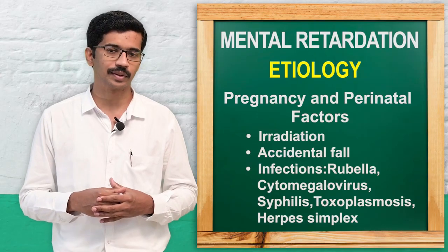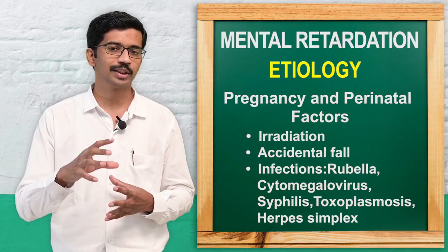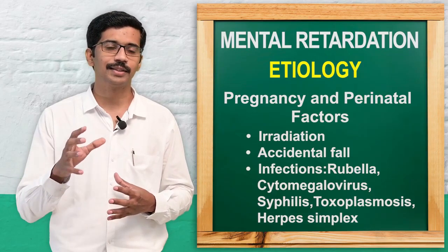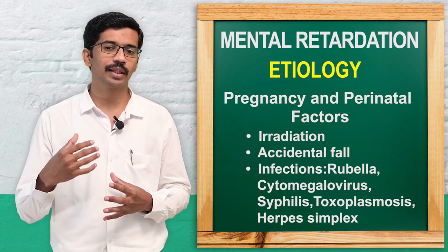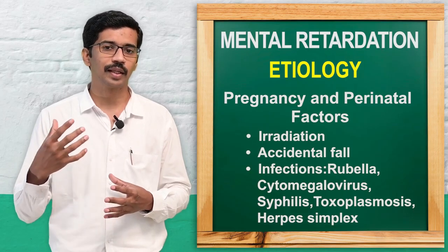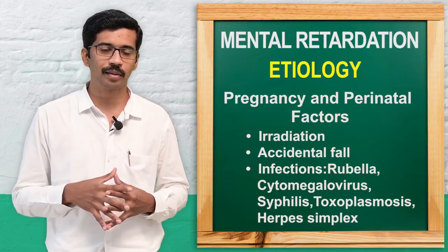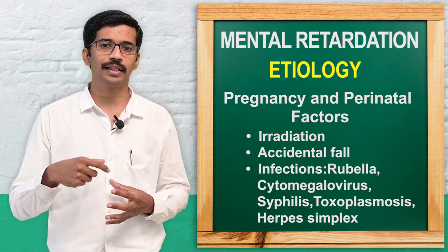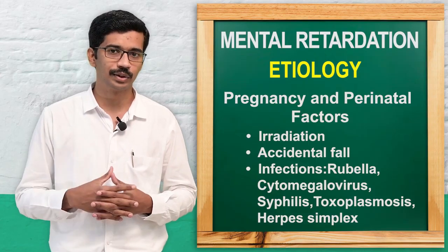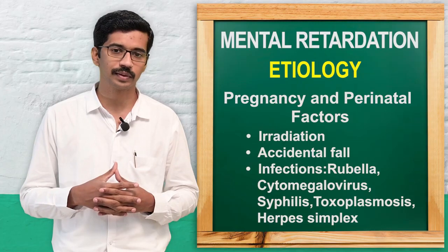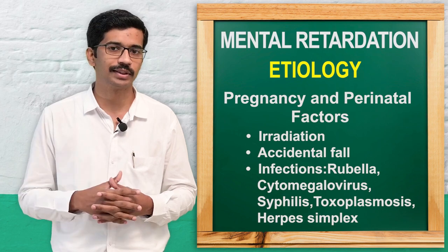Now the perinatal causes: antenatal, intranatal, and postnatal. During pregnancy, factors that can lead to mental retardation include the mother not taking proper nutrition — malnutrition — undergoing radiological examinations causing radiation exposure, accidental falls injuring the fetus, and any type of maternal infection. TORCH infection is the best example: toxoplasmosis, rubella, cytomegalovirus, and herpes simplex.